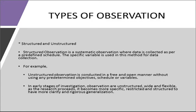Let us see the types of observation. Observation may be structured and unstructured. In structured observation, this is a systematic observation where data is collected as per a predefined signal. The specific variable is predefined, and the indicators or aspects reflecting those variables are also predefined. For example, if I want to observe leadership qualities among students, I must be clear what kinds of behaviors indicate leadership quality and observe those behaviors only.